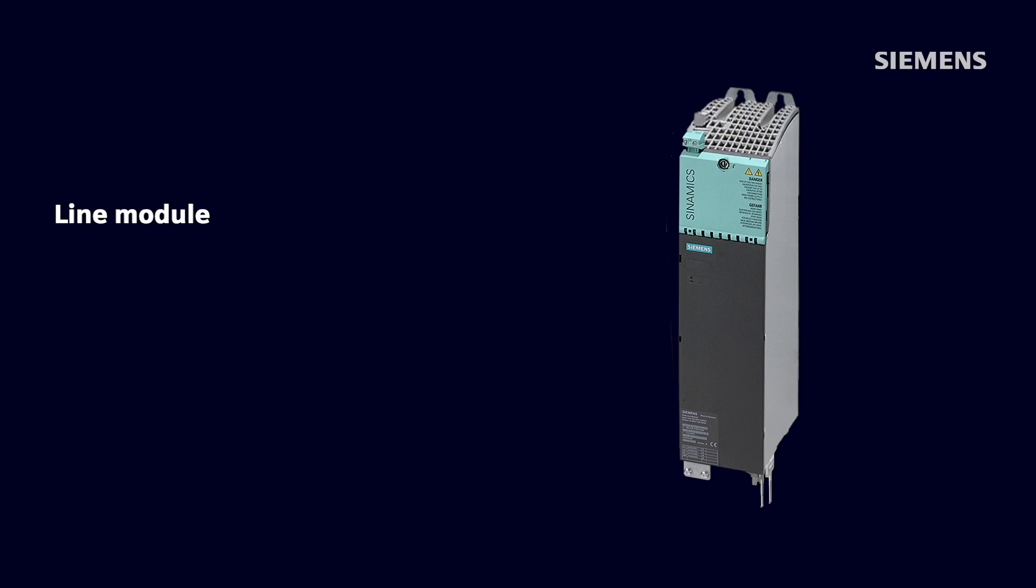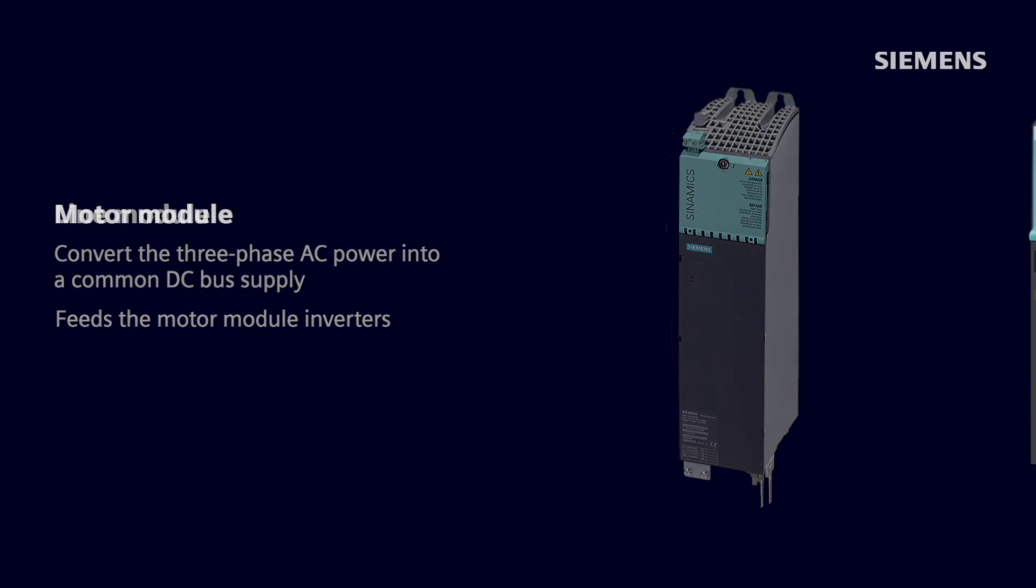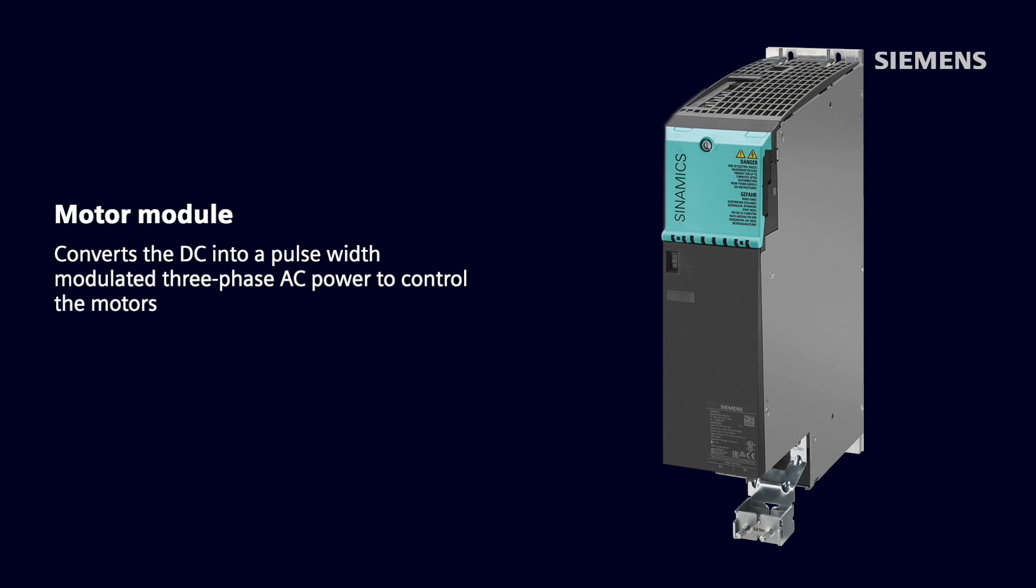Next is the line module, which is the subject of this video. The main function of the line module is to convert the three-phase AC power into a common DC bus supply, which feeds the motor module inverters. The motor modules then convert the DC into a pulse-width modulated three-phase AC power to control the motors. An additional function that the line module serves is that it also provides an indicator for the motor modules that the DC link is powered up and ready to feed the motor power.